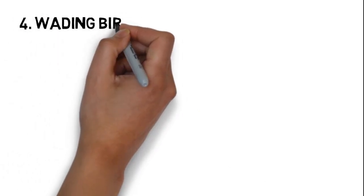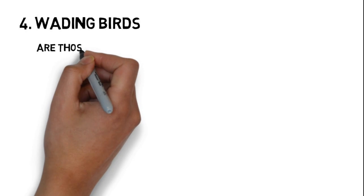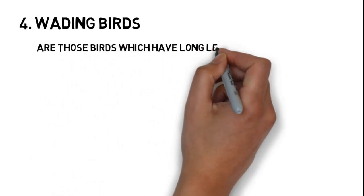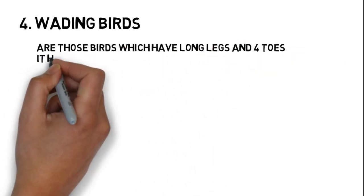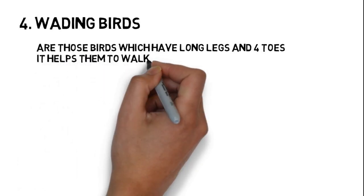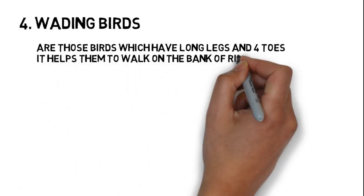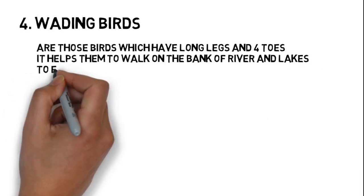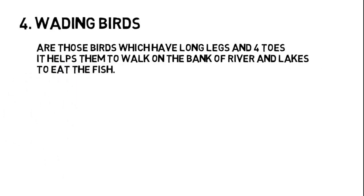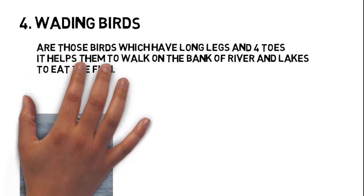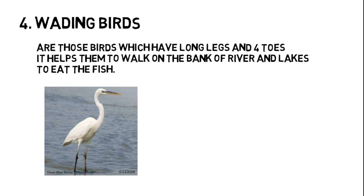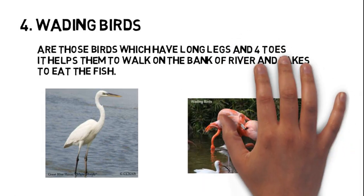Number four, wading birds. These birds have long legs and four toes, which help them walk on the banks of rivers and lakes to eat fish. For example, cranes and flamingo.